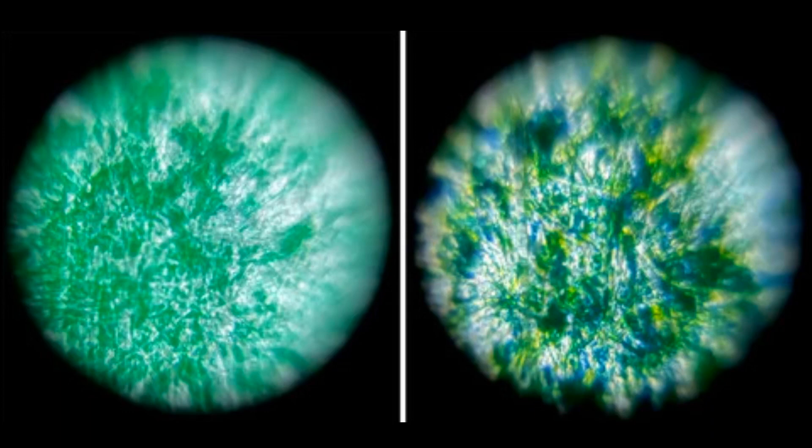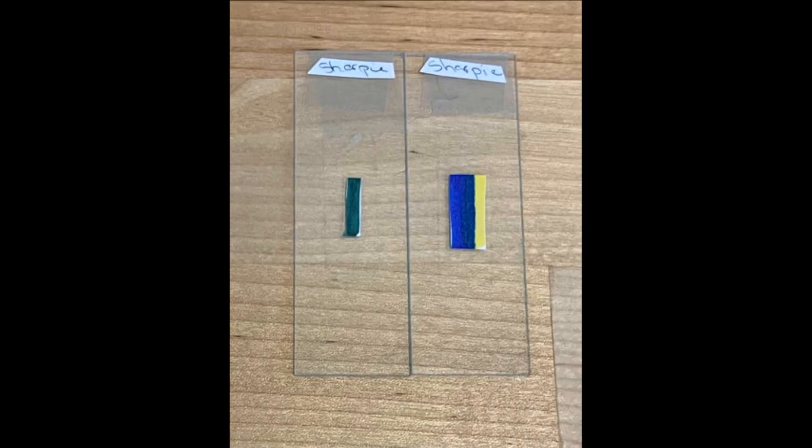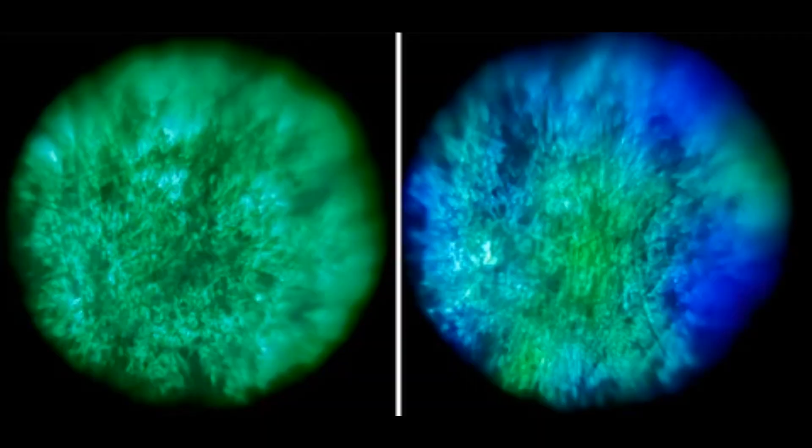The next step to test how well colors mix under a microscope was to use a permanent marker. These pens usually coat paper so well that the color bleeds right through to the backside. As evidenced, the color on the paper is much more intense when using a permanent marker. In the microscopic images, there were no white paper fibers visible with the permanent marker. However, the separate yellow and blue pigment was still able to be seen under the Foldscope.